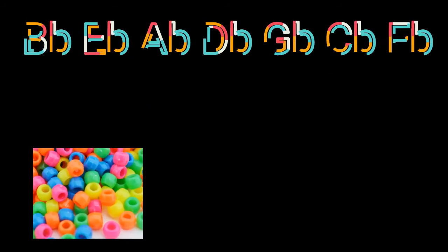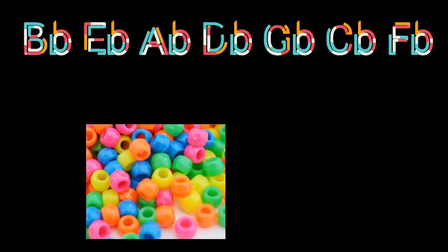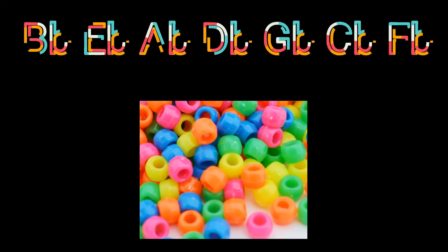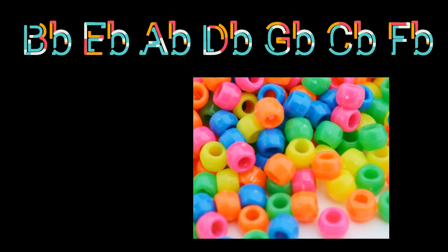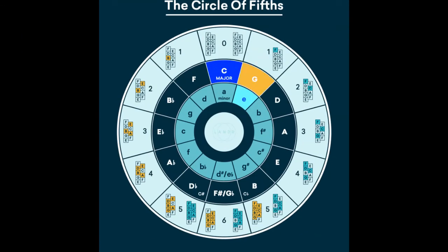And the order of the flats is backwards from the sharps: B, E, A, D, G, C, F spells the word BEAD, and then you'll have to figure out what you want to do for the last three. So that's it for the circle of fifths. Enjoy, see you next time.